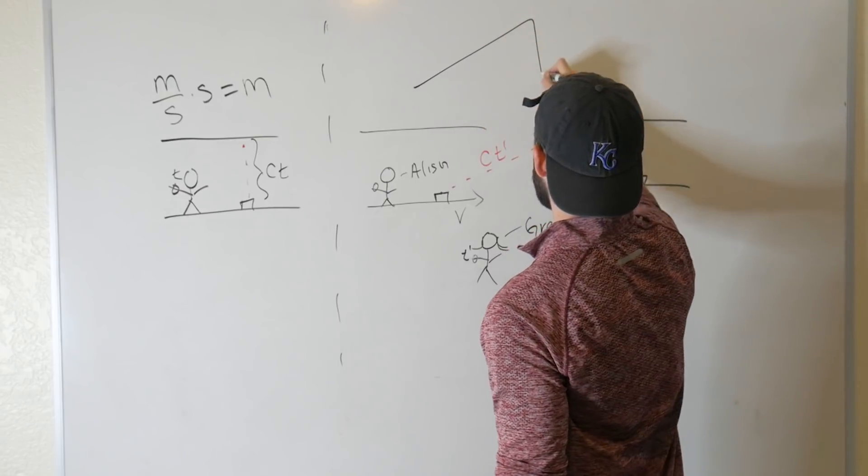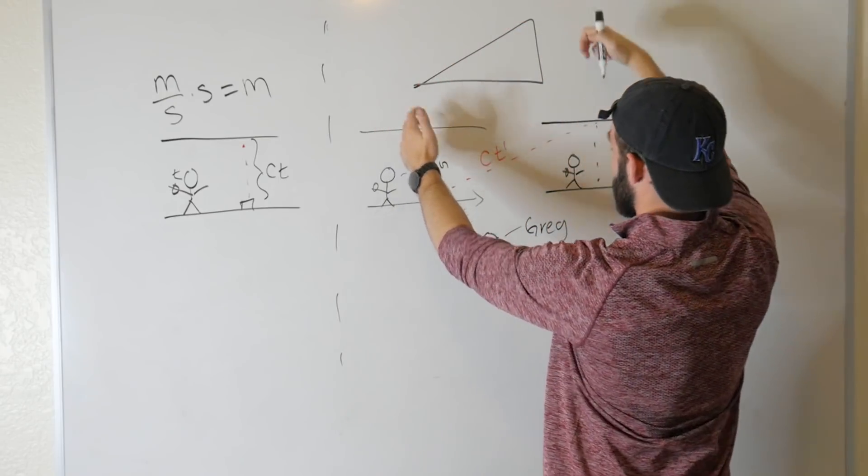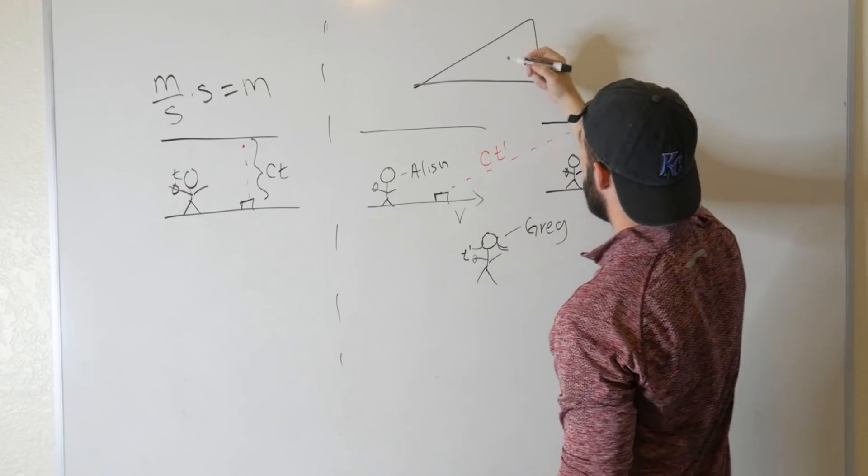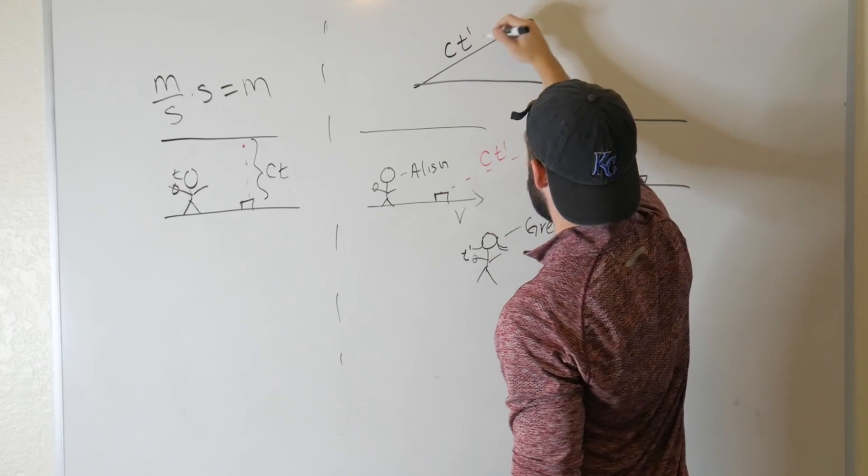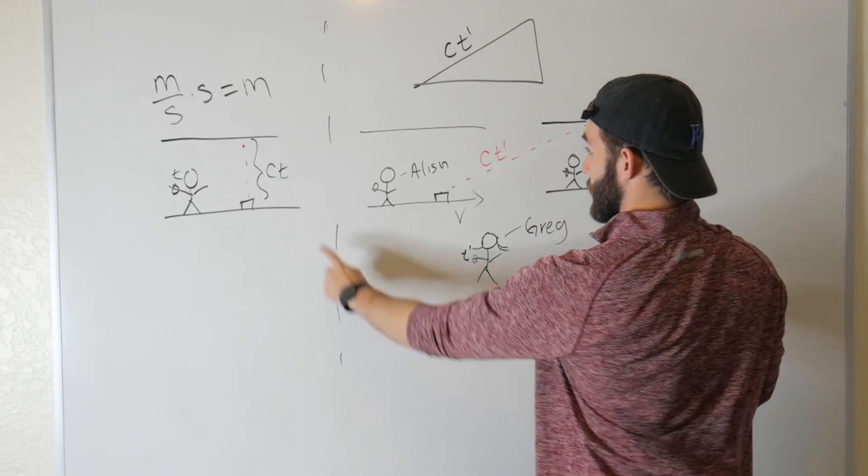So if we blow up this triangle, this distance here is just going to be C T prime. This distance here is going to be C T.